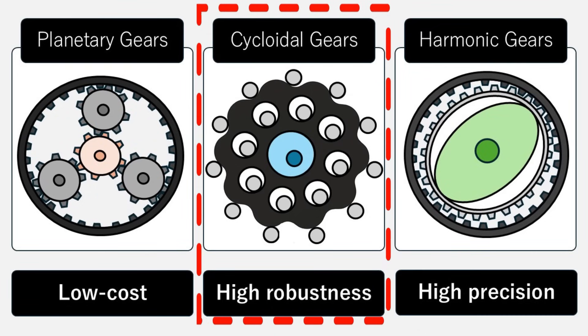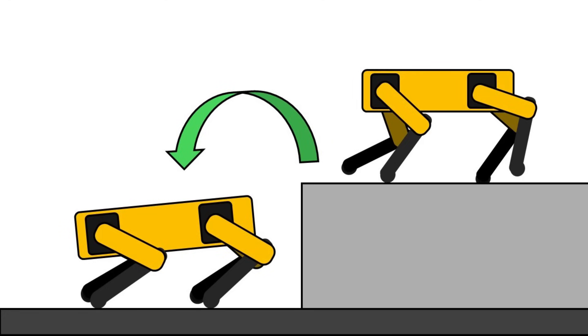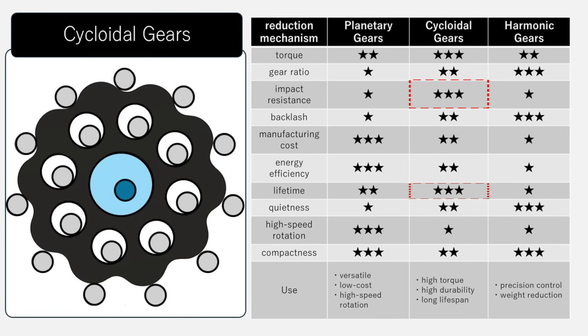For this project, I chose to go with cycloidal gears. Quadruped robots experience significant shock loads on their joints, especially upon landing. The durability of cycloidal gears is highly appealing in that context. Moreover, they deliver high torque while maintaining good precision, efficiency, and quiet operation—an all-around balanced option.